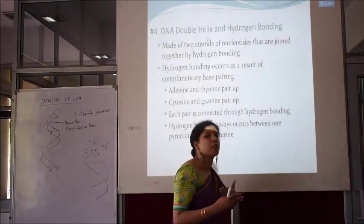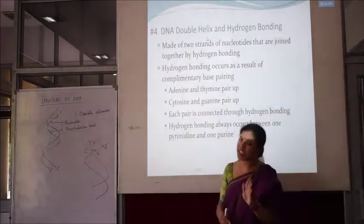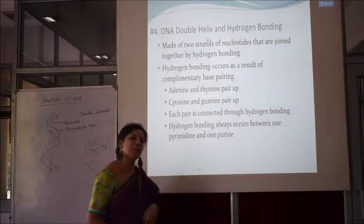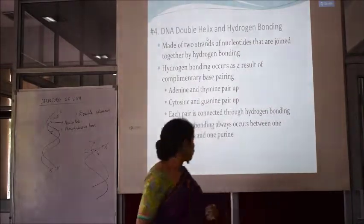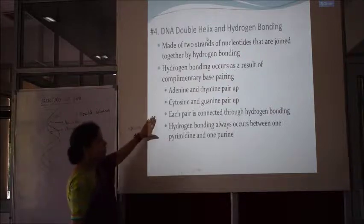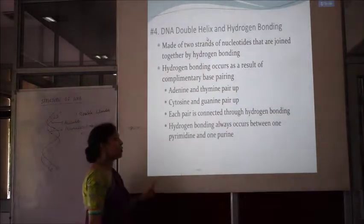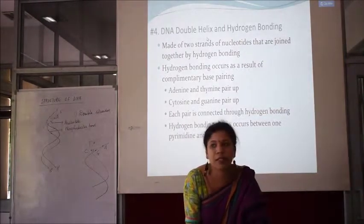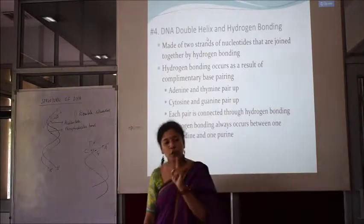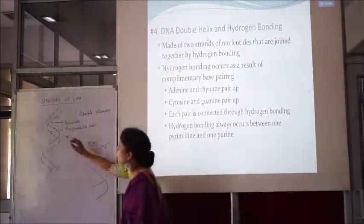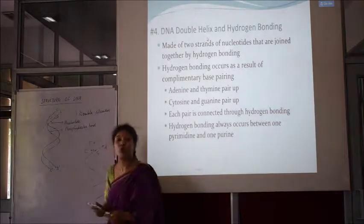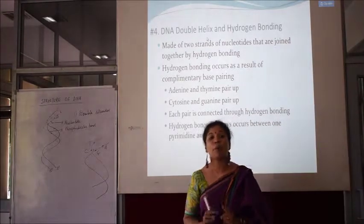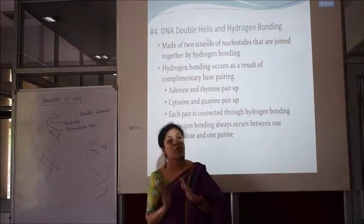Always a purine base pairs with a pyrimidine and vice versa. Adenine always base pairs with thymine with the help of two hydrogen bonds. Each pair is connected by hydrogen bonding, and hydrogen bonding always involves one pyrimidine and one purine. We have discussed two types of bonds: phosphodiester bonds and hydrogen bonds. Phosphodiester bonds are present between two nucleotides of the same strand — they are covalent bonds. Hydrogen bonds are formed between the two complementary bases of the two strands.